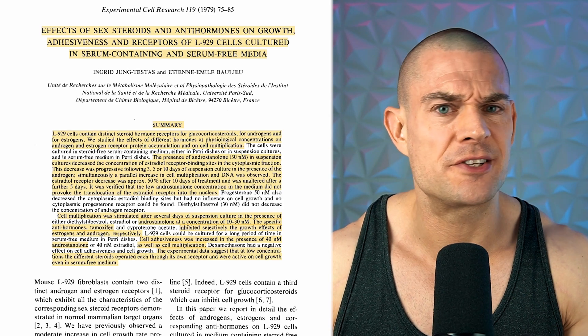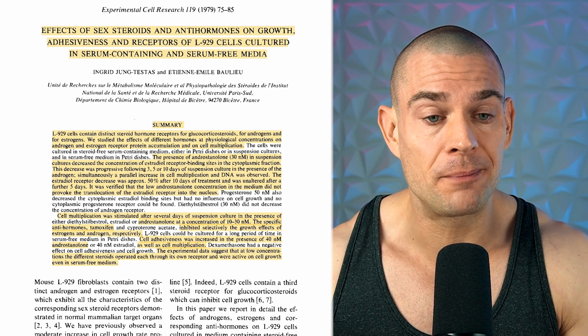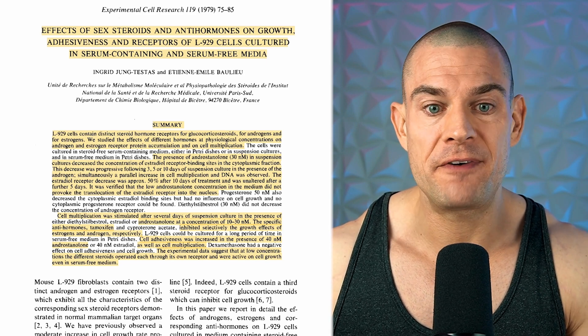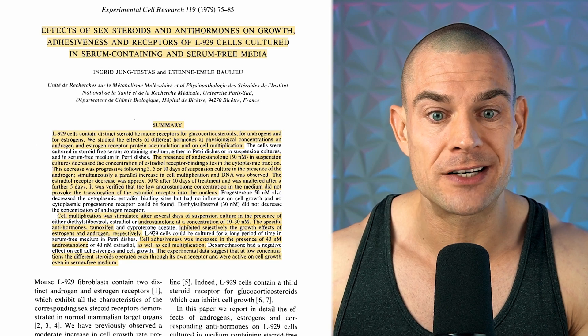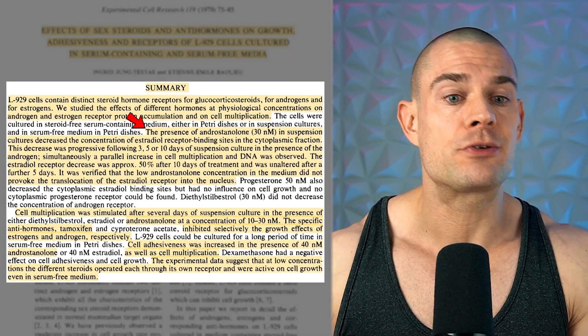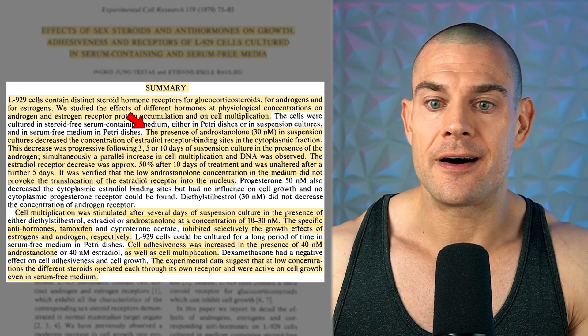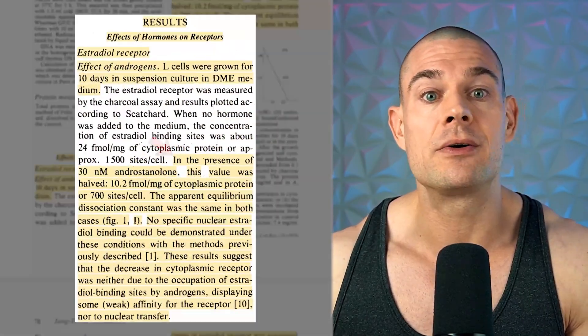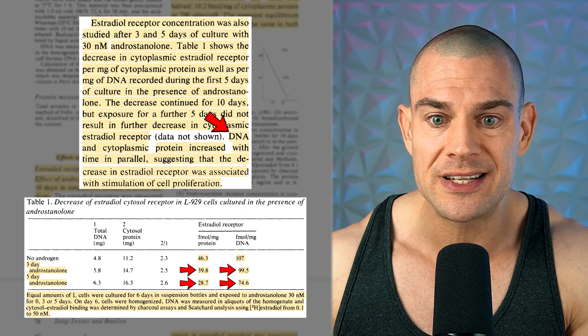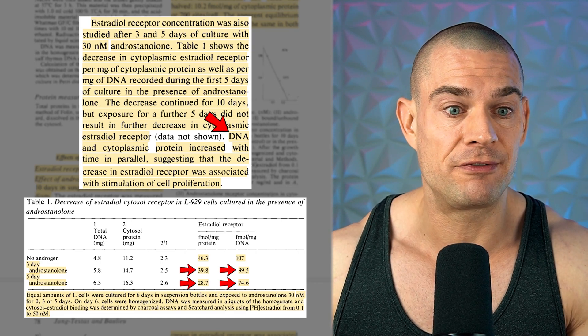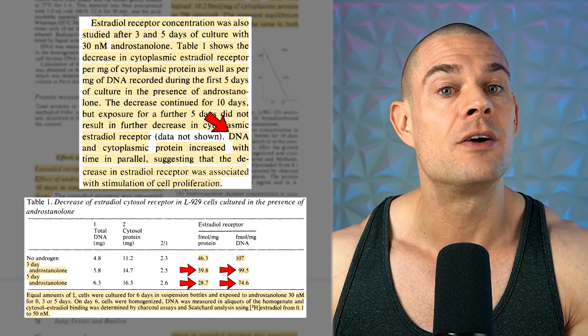However, a study performed four years earlier — 44 years ago — by Jung Testas et al., published March 1st, 1973, titled 'Effects of Sex Steroids and Anti-Hormones on Growth, Adhesiveness and Receptors of L-929 Cells Cultured in Serum-Containing and Serum-Free Media,' assessed the effects of dihydrotestosterone on mouse L-929 fibroblast cell lines. Androstanolone, better known as DHT, reduced estradiol-to-estrogen receptor binding sites. Dihydrotestosterone reduced estrogen receptor content within the cytoplasm of the mouse L-929 fibroblast cell lines, but protein synthesis and cell proliferation were not affected.